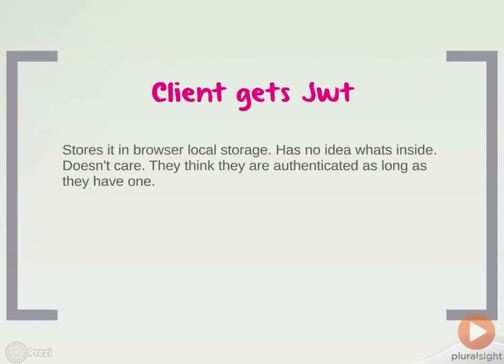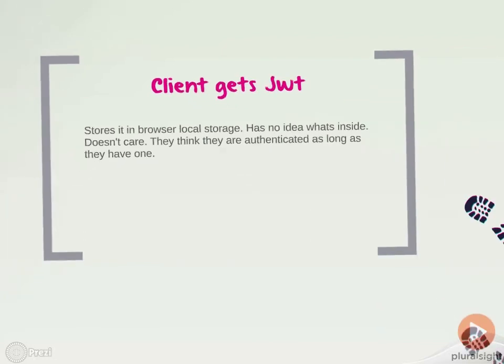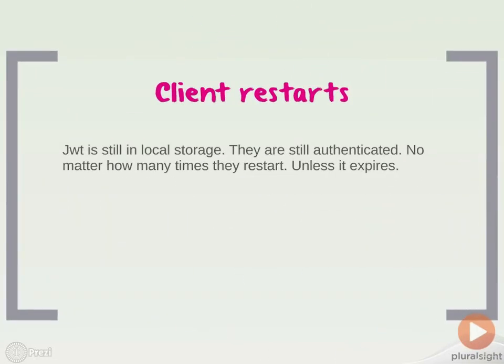At this point, the client gets the JWT. It has no idea what's inside, it doesn't know what it is, because it can't decode it — only the server can. And so it just saves it inside its local storage, and as long as it has that entry inside the local storage, it believes that it's authenticated. Now let's say the client restarts. The JWT is still in local storage because it's persistent, and because of that, they're still authenticated. No matter how many times the browser or client might restart, they'll still be authenticated, unless of course the JWT expires.